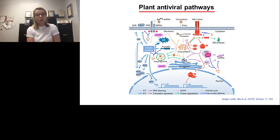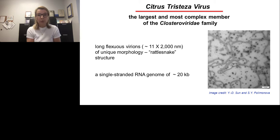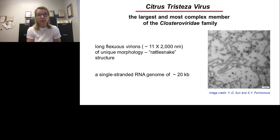We are working with citrus tristeza virus, the largest and most complex member of the Closteroviridae family. It has long, flexuous virions of unique morphology — a so-called rattlesnake structure — built of two capsid proteins which cover the genomic RNA, which is approximately 20 kilobases in size. The natural host range of CTV is limited to citrus, in which the virus infects phloem-associated cells. Under laboratory conditions, the virus can also infect the herbaceous host Nicotiana benthamiana.